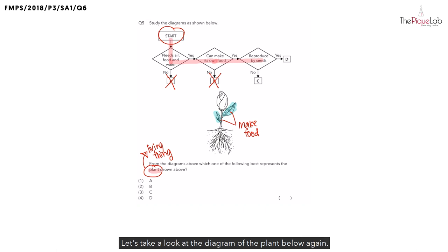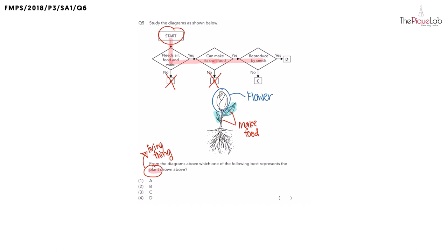Let's take a look at the diagram of the plant below again. Can you see something special growing on this plant? It is the flower. This plant has flower growing on it. When a plant has flowers growing on it, what can we tell about this plant? Is it a flowering plant or a non-flowering plant? If a plant is able to produce flowers, this means that it is a flowering plant.